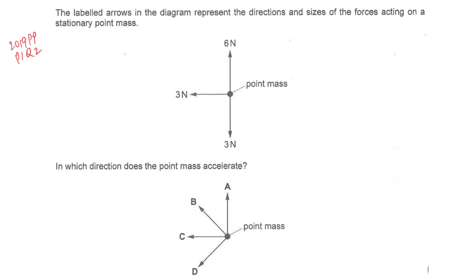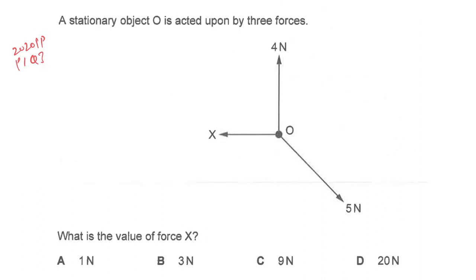This question is similar to the previous one. Consider vertical forces: 6 Newton and 3 Newton give a resultant of 3 Newton upward. Combined with 3 Newton to the left, you have 3 Newton upward and 3 Newton to the left at 90 degrees. The resultant force will be diagonally to the upper left, so the object moves in that diagonal direction — answer B.